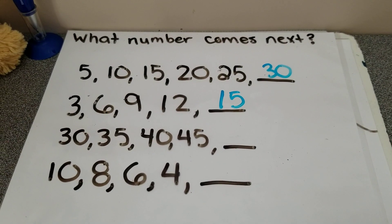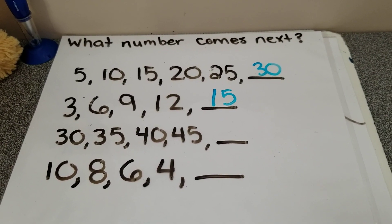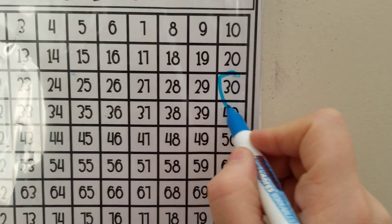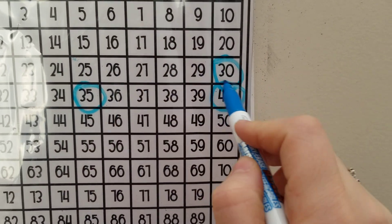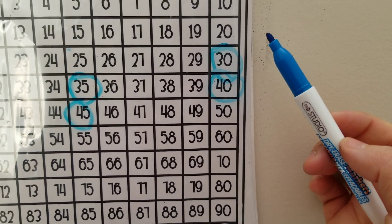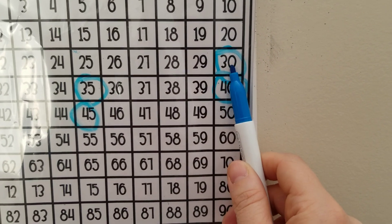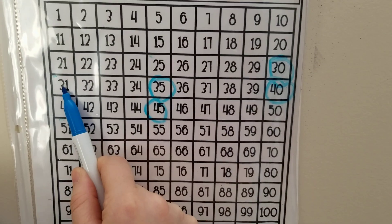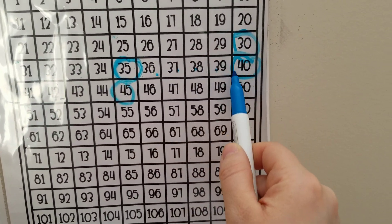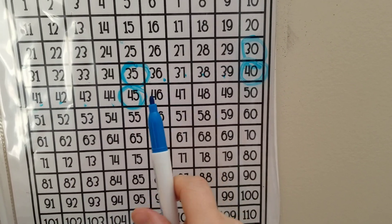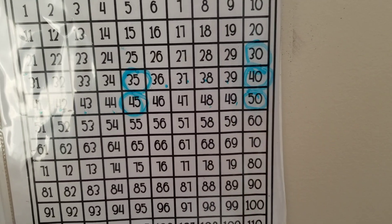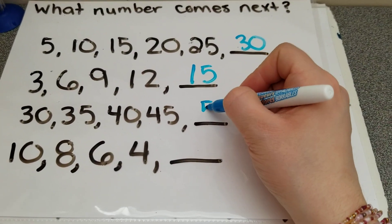Next one we have 30, 35, 40, 45. This is tricky — it starts really high. So 30, 35, 40, 45. All right, let's figure out how many we're skip counting by. If we start here, we're gonna go one, two, three, four, five — one, two, three, four, five — so we've counted by fives. Let's keep going the pattern: one, two, three, four, five. Our number is 50.